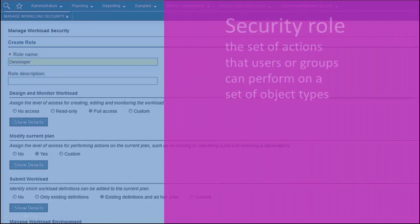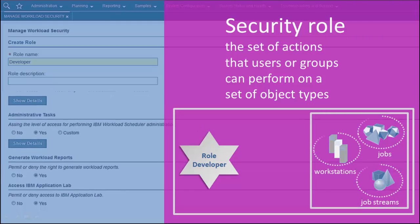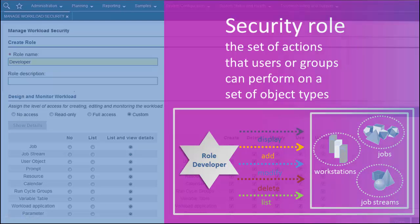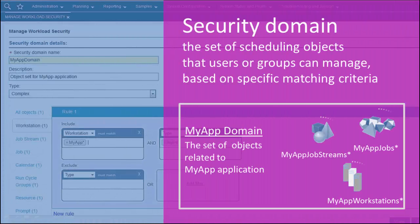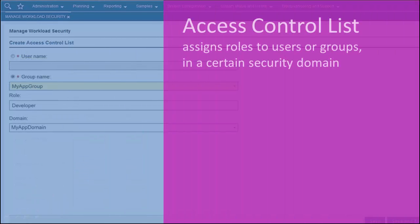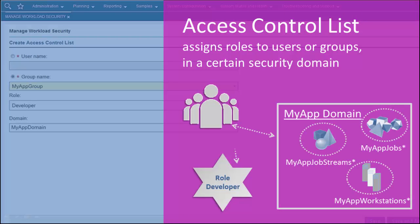A security role represents a certain level of authorization and includes the set of actions that users or groups can perform on a set of object types. A security domain represents a set of scheduling objects that users or groups can manage based on specific matching criteria. An access control list assigns roles to users or groups in a certain security domain.